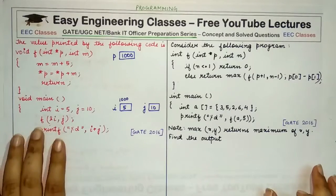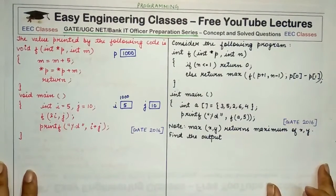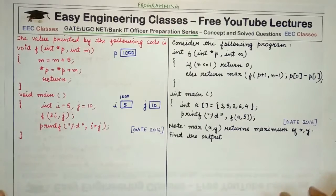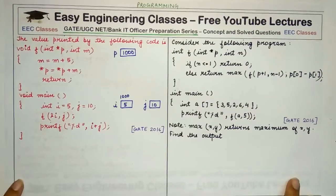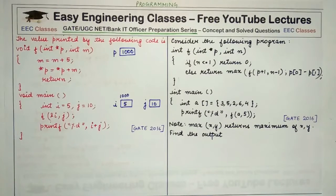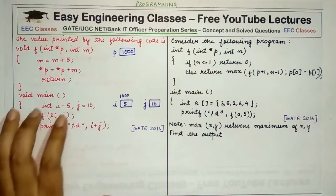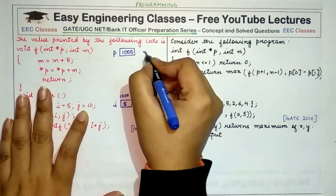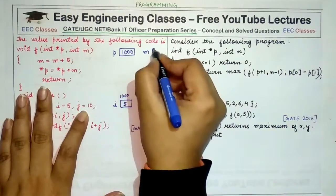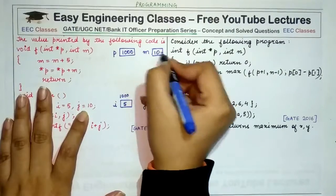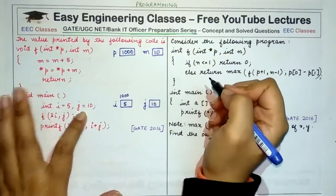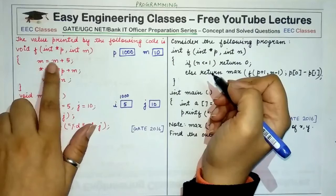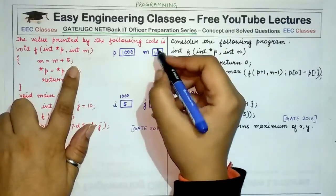The second parameter of f is j, which means m — the local variable in the function — would now be assigned the value of j. The value of j was 10, so m is 10. In function f, m is equal to m plus 5, so the value of m is changed from 10 to 15.